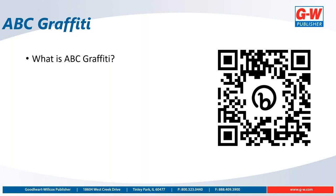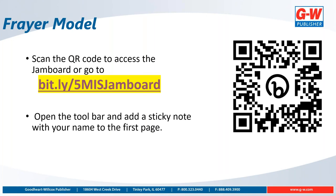We've completed three strategies out of five — we have two more. This next one is highly interactive: the Frayer Model, a graphic organizer. Scan the QR code to access a Google Jamboard on your smartphone, or type the bit.ly link — bit.ly forward slash five, then capital MIS, then Jamboard with a capital J — into another tab. When you open the tool, you'll see a white page. Add a sticky note with just your name first to practice using the sticky note feature before engaging with content.